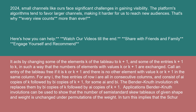Call an entry of the tableau free if it is k or k+1 and there is no other element with value k or k+1 in the same column. For any row i, the free entries are all in consecutive columns and consist of a_i copies of k followed by b_i copies of k+1. The Bender-Knuth involution sigma_k replaces them by b_i copies of k followed by a_i copies of k+1.